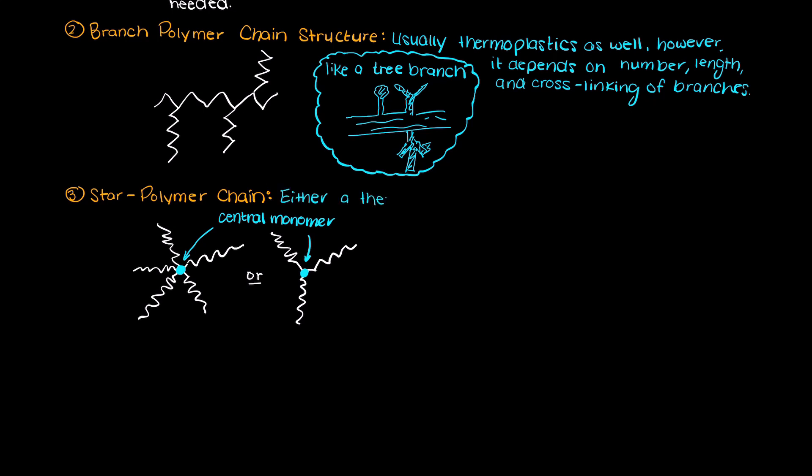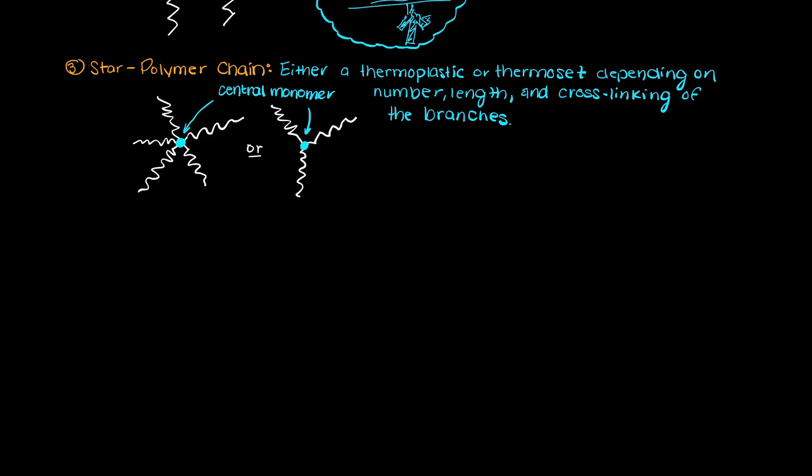This type of polymer chain can either be a thermoplastic or a thermoset depending on how long the branched chains are and if there is any cross-linking occurring.